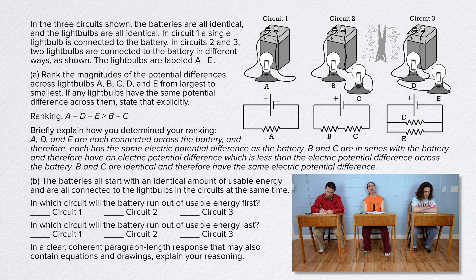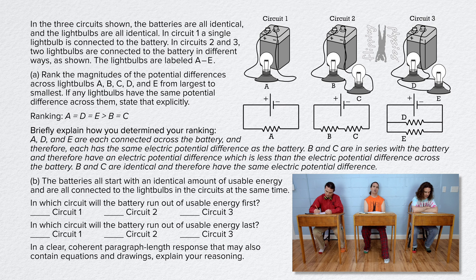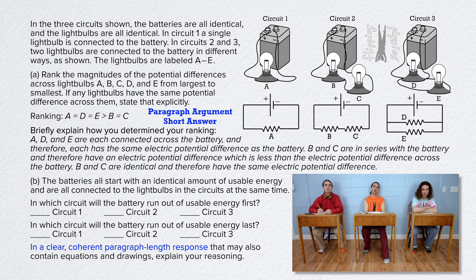Please read part B. The batteries all start with an identical amount of usable energy and are all connected to the light bulbs in the circuits at the same time. In which circuit will the battery run out of usable energy first? And in which circuit will the battery run out of usable energy last? Then it says, in a clear coherent paragraph-length response that may also contain equations and drawings, explain your reasoning. Because it says 'in a clear coherent paragraph-length response,' this must be the paragraph argument short answer question for this exam.